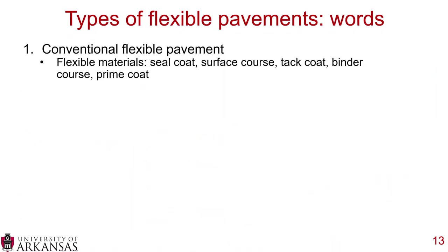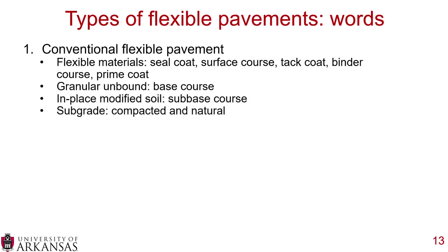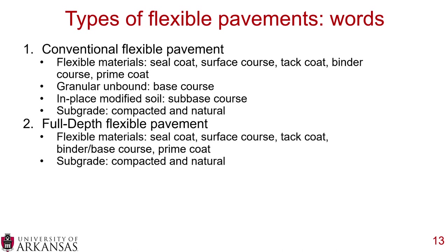A conventional flexible pavement starts with an optional seal coat at the top, then surface courses, tack coats, binder courses, and a prime coat. Below that is granular unbound material as the base course, then in-place modified soil as the sub-base, and finally the subgrade — compacted and natural material. Full depth flexible pavement uses the same flexible material layers but goes directly from flexible materials to the subgrade with no granular unbound or modified soil layer.